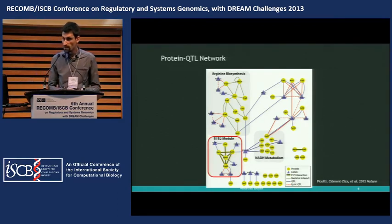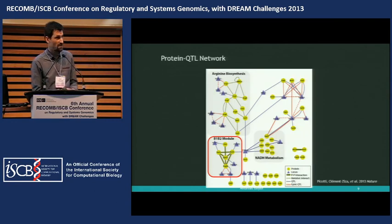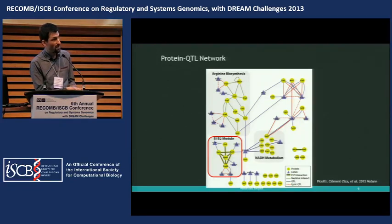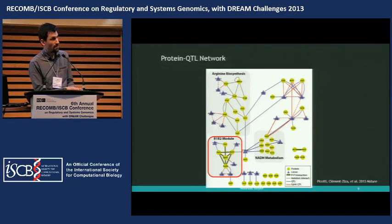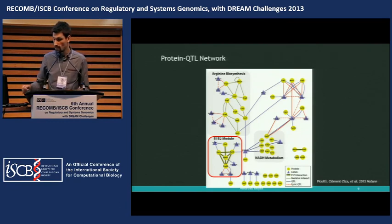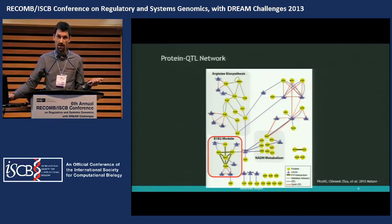We had a second observation that was interesting for the evolutionary side: we found what we call the B1B2 module controlling amino acid biosynthesis. All the proteins in this module are affected by at least one QTL, but importantly they are different — different QTLs controlling this pathway. We could show that these different variants keep the pathway in a homeostatic state in the different parental strains, meaning there has been positive selection at different loci.